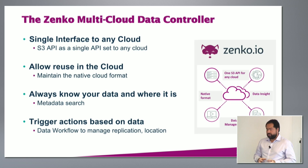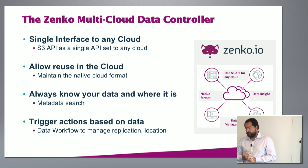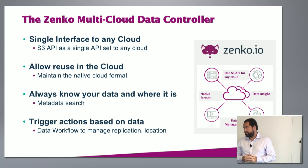The first pillar is a single interface to the cloud — the S3 API. Whether you store the data locally on your drives, on a NAS, or on Azure or Google Cloud, you still want to use the S3 API because it's the de facto standard. If you look for ISVs that support object protocol, they will all support the S3 protocol. We wanted to give a unified S3 API access to many different backends.